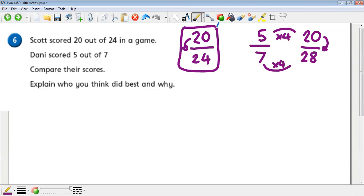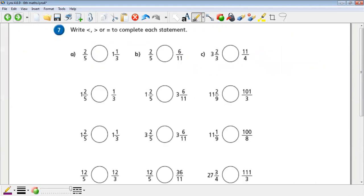If you have two jugs, for example, this jug here that you could fit 24 in, and then you stacked up 20, that'd be almost full. If you put 20 into the jug that's 28, it's not going to be as full as that. So here is the greater fraction.